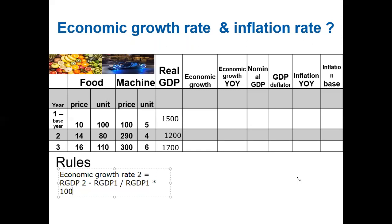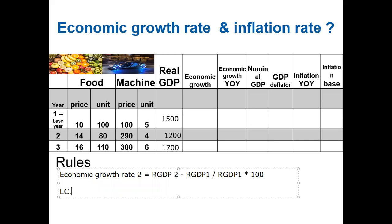For year two, economic growth rate equals 1200 minus 1500, divided by 1500, times 100. This gives approximately negative 20 percent. Production declined, which means we are experiencing a recession — a decrease in production from one year to the next.